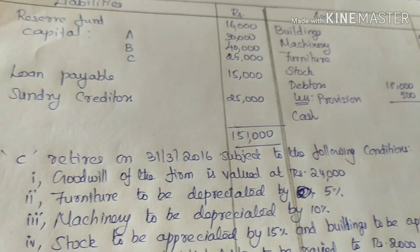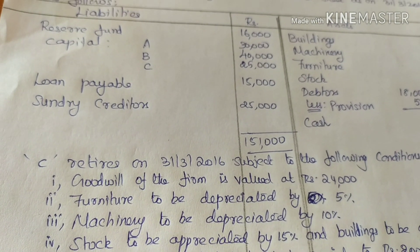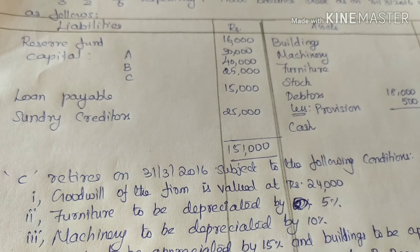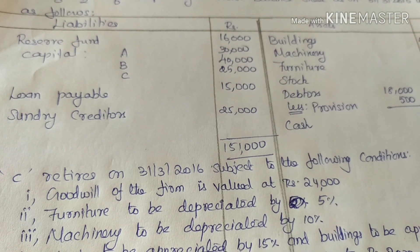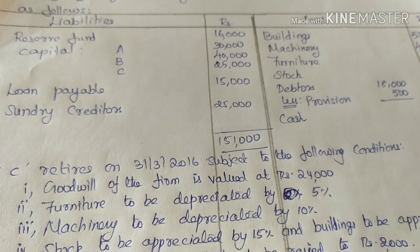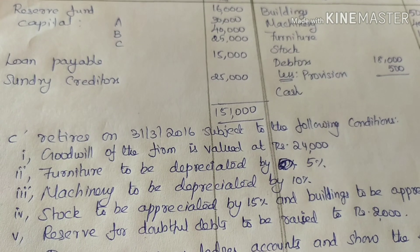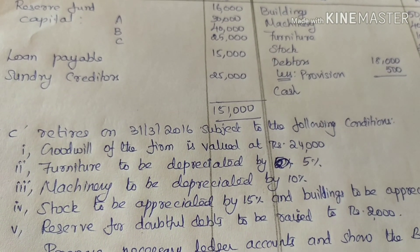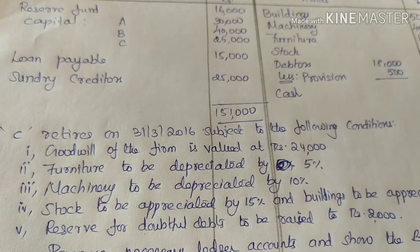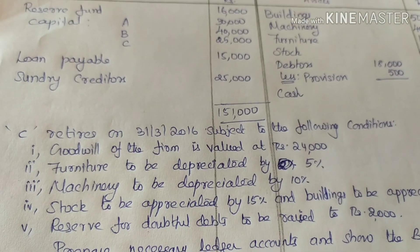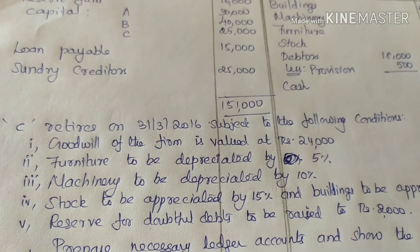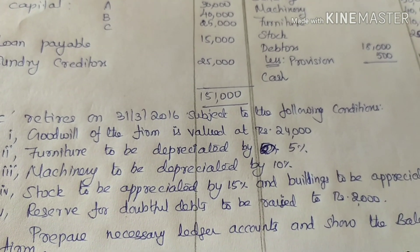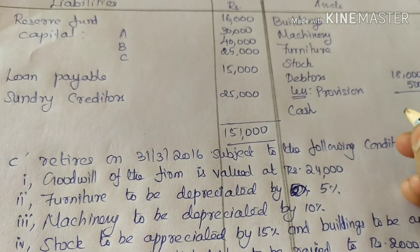C retires from the partnership. C retires on 31st March 2016 subject to the following conditions: goodwill of the firm is valued at rupees 24,000. Furniture is to be depreciated by 5%. We will look at the revaluation account for asset-side adjustments.